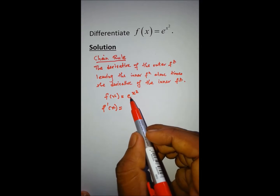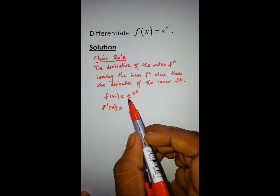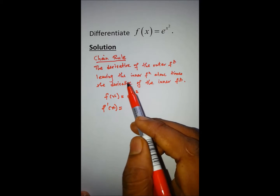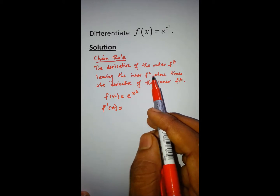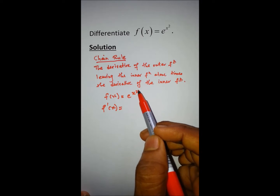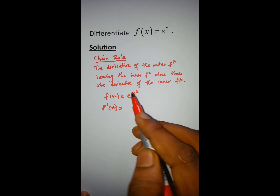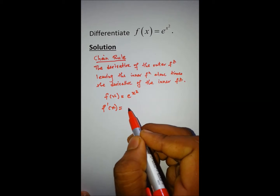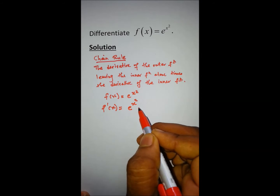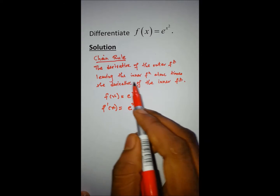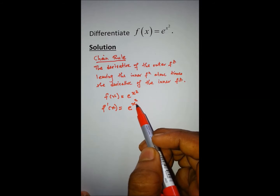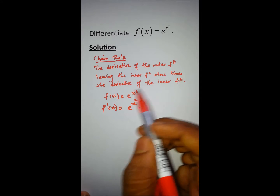We differentiate the outside function first. In this case the outside function is e^(x²). Differentiating e^(x²) gives us e^(x²), leaving the inner function alone, times the derivative of the inner function.